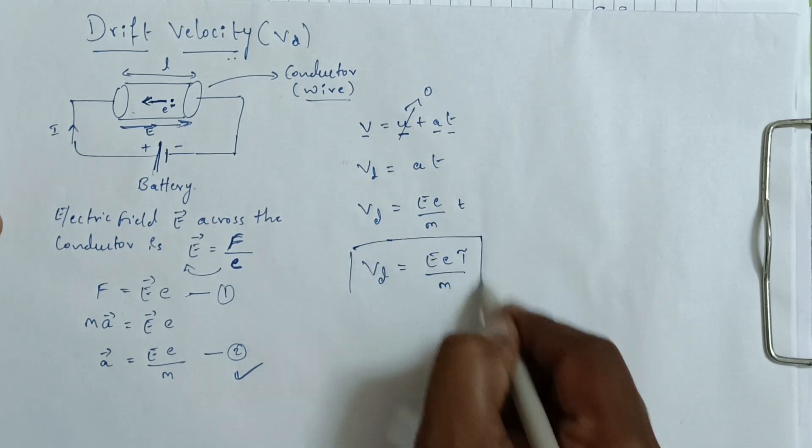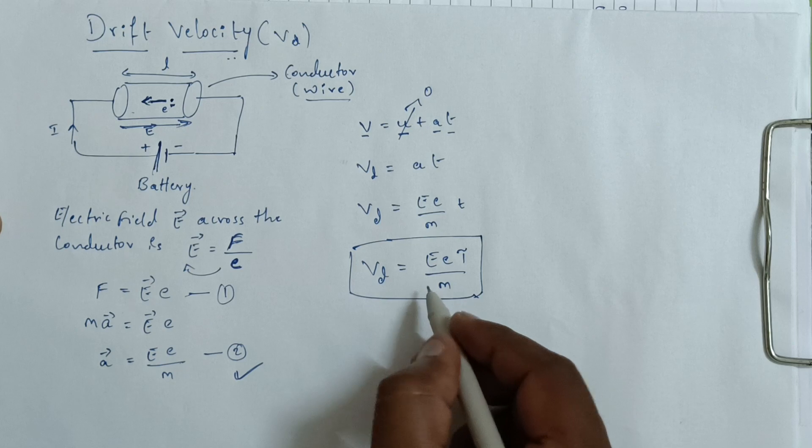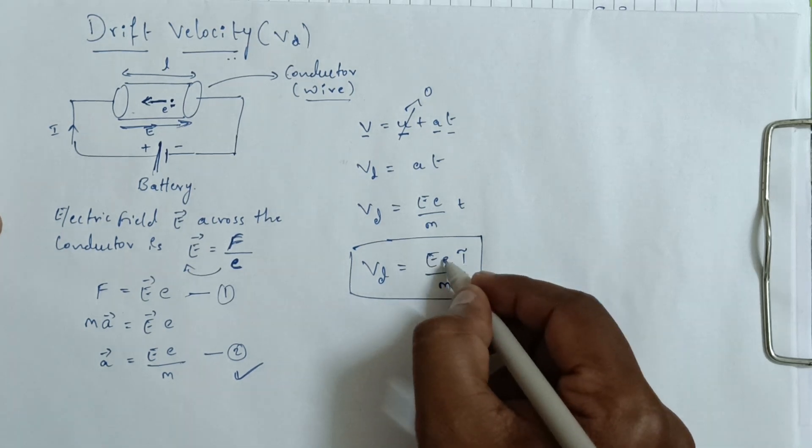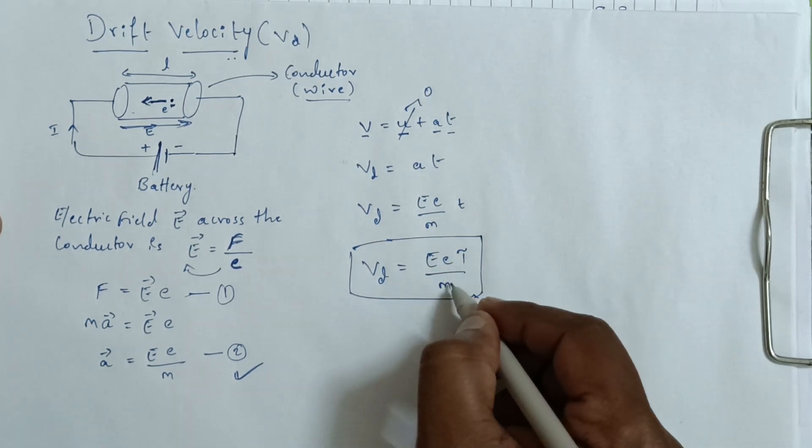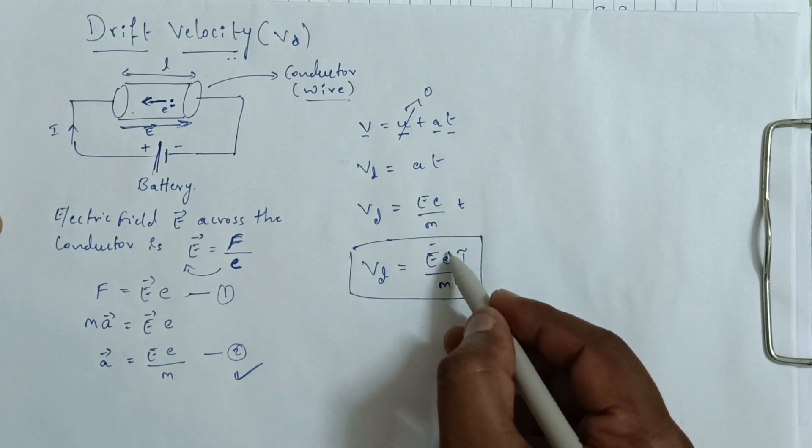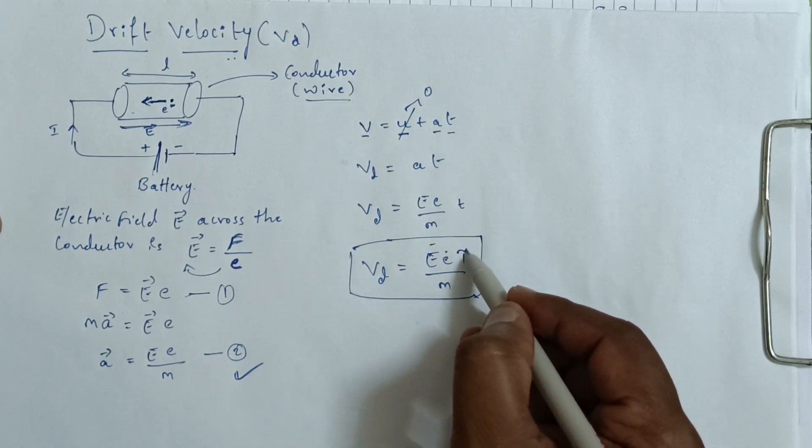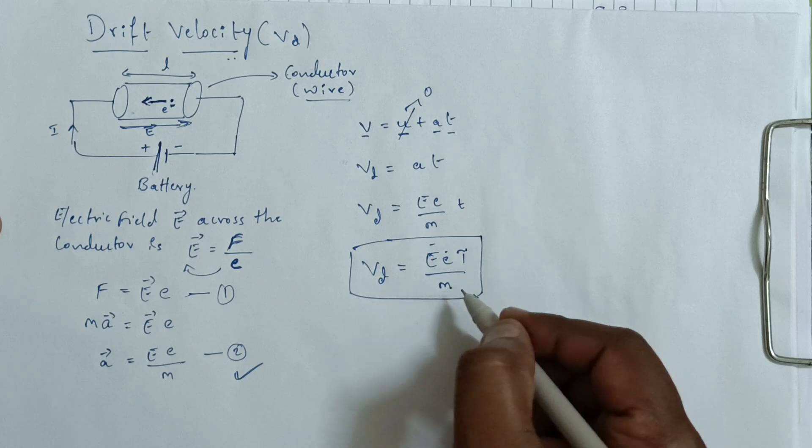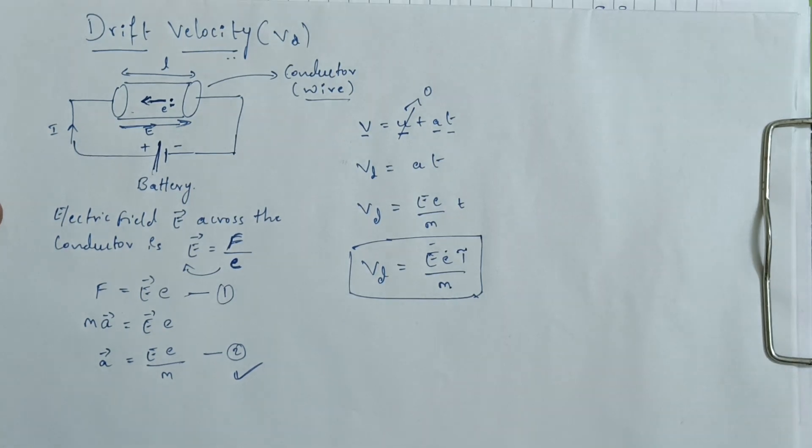Hence drift velocity expression is VD equals Eeτ divided by M. Here E means electric field, small e means charge on the electron, tau means relaxation time, and M is mass of the electron. This is the expression for drift velocity which is very important for your examination. Thank you.